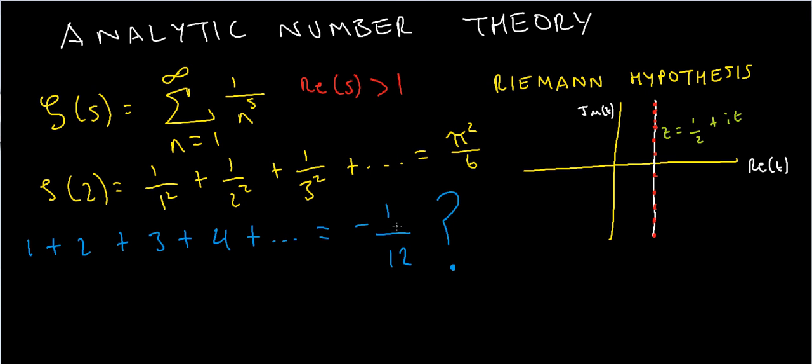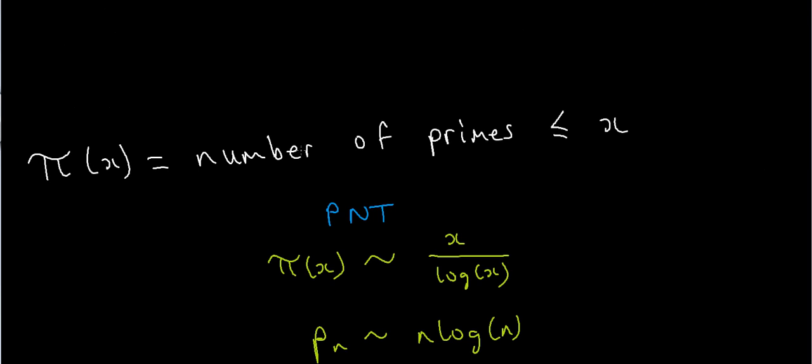Analytic number theory is not simply about the Riemann hypothesis. Another reason why people study this is to understand the distribution of primes. There are a bunch of other really cool results.